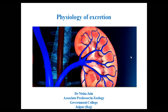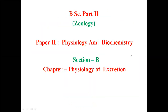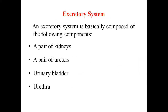We have already started physiology of excretion, and in physiology of excretion we have done ureotelic, ammonotelic and uricotelic. The next topic is the excretory system. Excretion involves our body's nitrogenous waste products, and this excretion is carried out by some important organs forming a whole system, which we call the excretory system. An excretory system is basically composed of the following components.